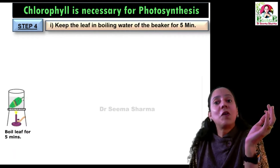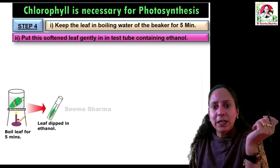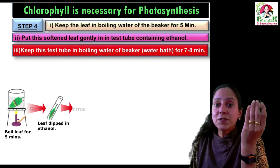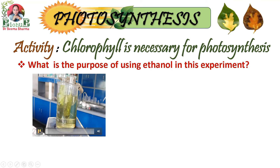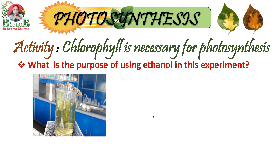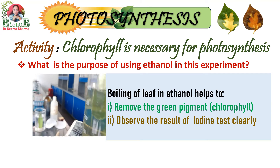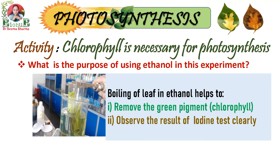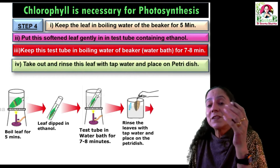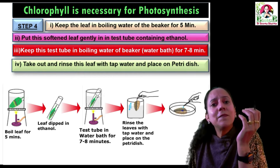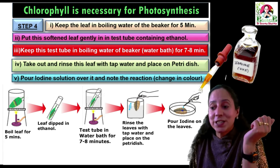Then subject this variegated leaf to the iodine test: first, keep the leaf in boiling water for five minutes. Then put the leaf in a test tube containing ethanol and heat the test tube on a water bath for seven to eight minutes. Boiling the leaf in ethanol serves two functions: it removes the chlorophyll pigment from the leaf, and it allows the result of the iodine test to be observed clearly. Take out the leaf, rinse it gently with water, and spread it carefully on a petri dish.